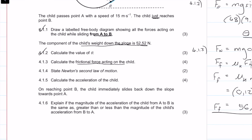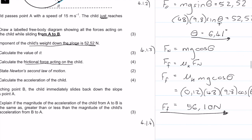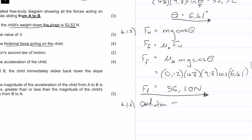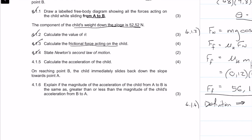Question 4.1.4: state Newton's second law of motion. Newton's second law states that when a net force acts on an object, the object accelerates in the direction of the net force. The acceleration is directly proportional to the net force and inversely proportional to the mass of the object. From this we get F_net = mass × acceleration.